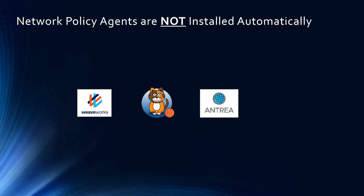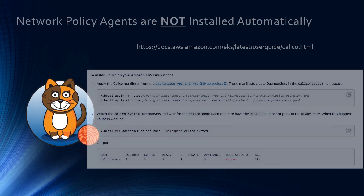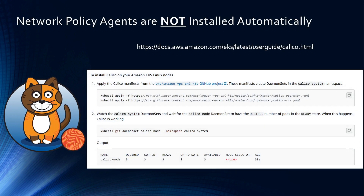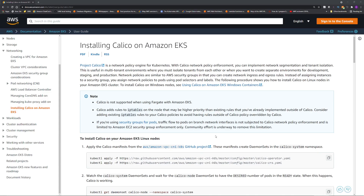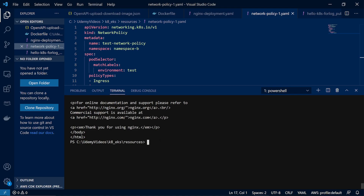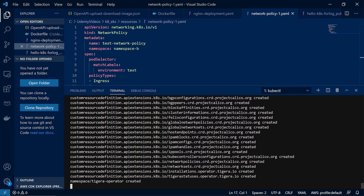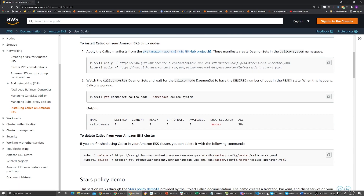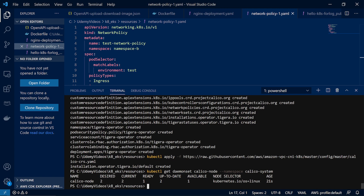There are several options for network policy agents: Weave, Calico, Antrea, etc. For this case, we are going to install Calico, which is the open-source network policy agent for our EKS cluster. There's a straightforward installation guide using a couple of kubectl apply commands. Let's go ahead and install Calico in our cluster. Calico is now installed.